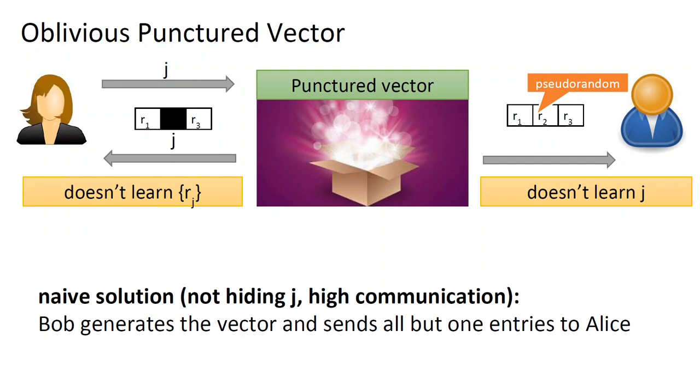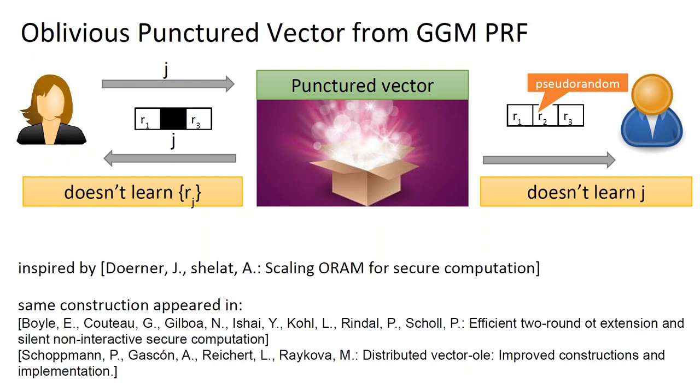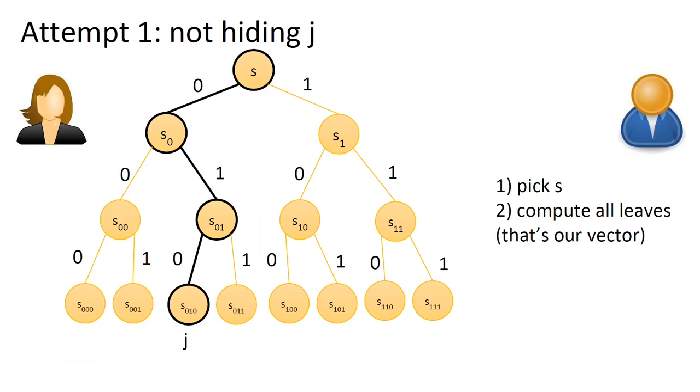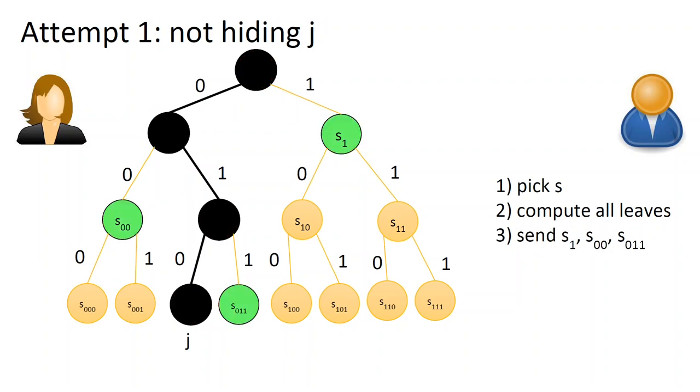Note that if we don't care about communication, and don't care about hiding j, then there is a naive solution, which is Bob generates the whole vector, and sends all but one element to Alice. Instead, we are going to present a solution, which achieves logarithmic communication complexity based on GGM PRFs. Our solution was inspired by a construction from Doerner and Shelat, and a very similar construction appears in recent works on optimizing OT and ORAM. So let me describe that. Let's first achieve logarithmic communication without hiding j. Bob should pick random root s and build the GGM PRF tree out of it. The leaves of this tree will be our vector. Then to transmit all but one value to Alice, Bob will send her the green nodes as in the picture. Alice can expand each of the green node into a sub-tree and thus learn all the leaves except for leaf number j.